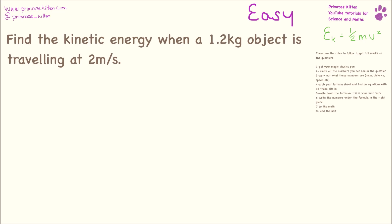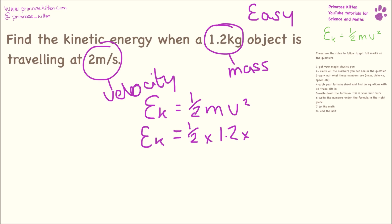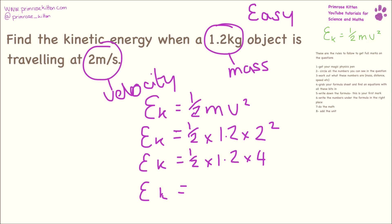Find the kinetic energy where a 1.2 kilogram object is travelling at 2 meters per second. Circle all of your numbers: 1.2 is mass, 2 is velocity. Always write down the equation: EK equals half mv squared. EK equals half times 1.2 times 2 squared. EK equals half times 1.2 times 4. So EK equals 2.4 joules. Always write that unit afterwards.